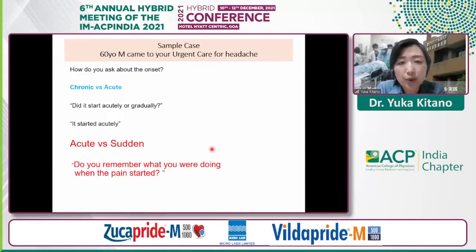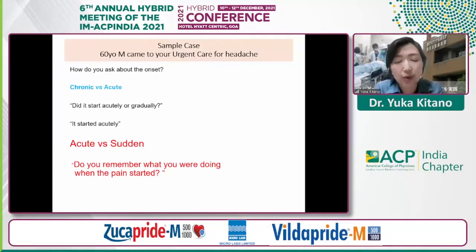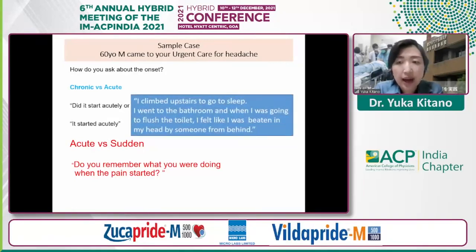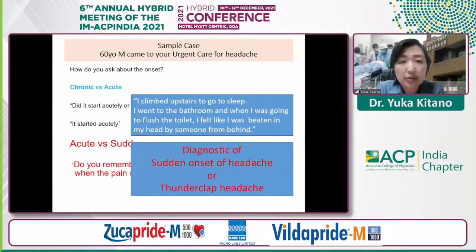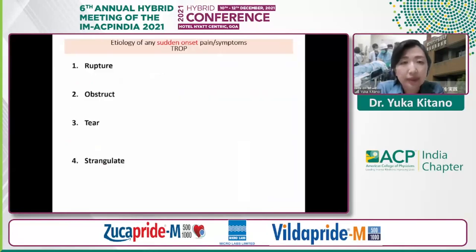The best way is to ask: 'Do you remember what you were doing when the pain came on?' In this sample case — an actual case I saw at urgent care recently — his answer was: 'I just had one can of beer, which is normal for me, and climbed upstairs to go to sleep. I went to the bathroom, and when I was about to flush the toilet, I felt like I was beaten in my head from behind.' This is diagnostic of sudden onset headache — in other words, thunderclap headache.